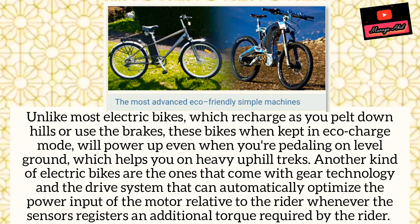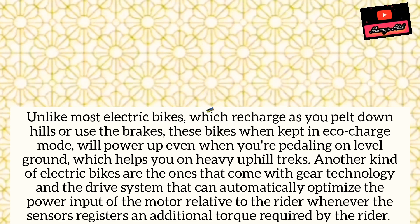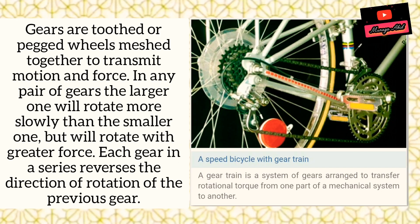Unlike most electric bikes which recharge as you go downhill or use the brakes, these bikes when kept in eco-charge mode will power up even when you are pedaling on level ground, which helps you on heavy uphill tracks. Another kind of electric bike comes with gray gear technology and a drive system that can automatically optimize the power input of the motor relative to the rider whenever the sensor registers additional torque required.